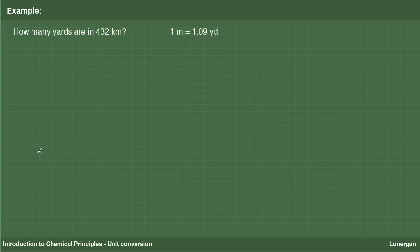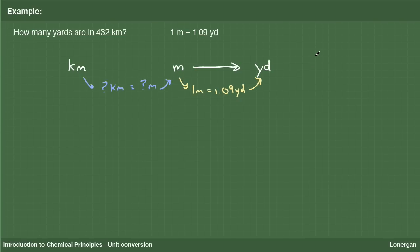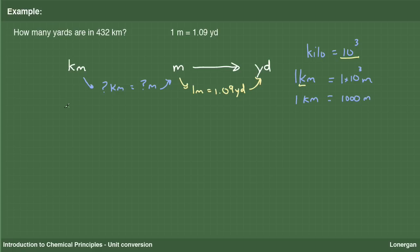We now return to the problem presented at the beginning of this screencast: how many yards are in 432 kilometers, given 1 meter equals 1.09 yards? We need to convert kilometers to yards. The conversion factor given does not convert directly between these units. The conversion factor 1 meter equals 1.09 yards converts yards into meters but not kilometers, so we will need an additional step. We need to get from meters to kilometers; the SI prefixes provide the necessary equivalence relation. The SI prefix kilo, abbreviated K, is synonymous with 10 to the third, so 1 kilometer equals 1,000 meters. This gives conversion factors 1,000 meters over 1 kilometer, or 1 kilometer over 1,000 meters.